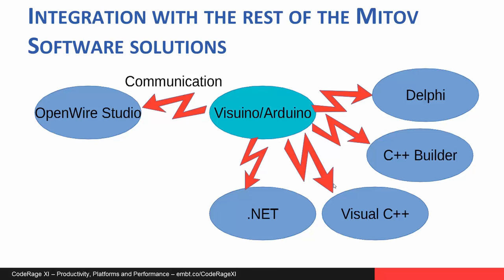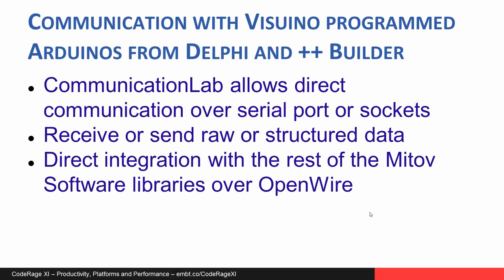In addition, Visuino, Communication Lab, and OpenWire Studio all contain MQTT messaging protocol components, and with the help of an MQTT server, can communicate with each other. Communication Lab allows direct communication over serial port or sockets. It can receive or send raw or structured data, and allows direct integration with the rest of the Mitov Software libraries over OpenWire connections.